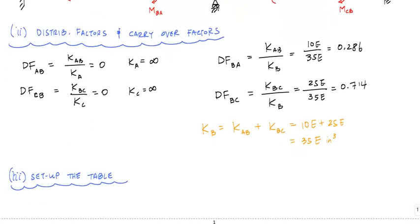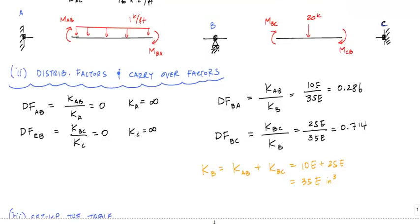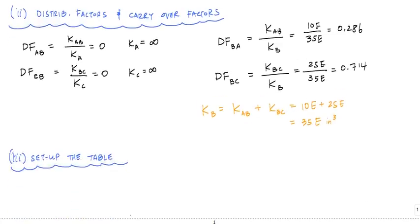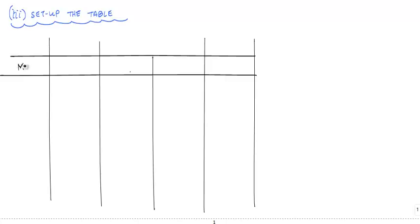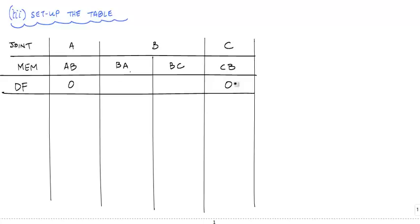Now let's set up the table to aid our calculations. I want the same number of columns as end moments I need to solve for — four columns — plus a labeling column. The columns are MAB, MBA, MBC, and MCB. The first row labels the joints: A, B, and C. The next row is the distribution factors: DFA = 0, DFBA = 0.286, DFBC = 0.714, and DFC = 0 because those joints are fixed.